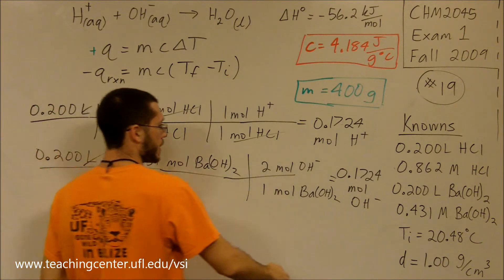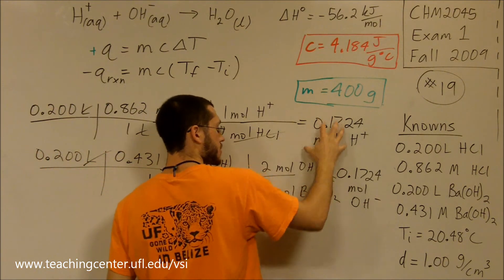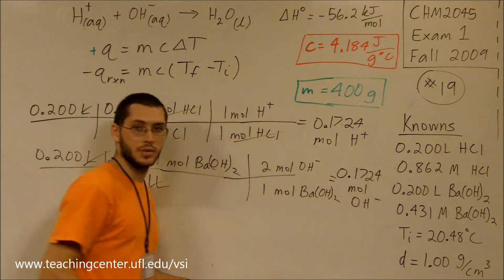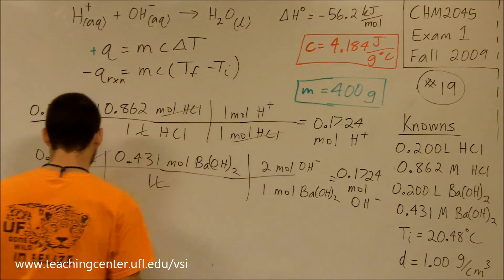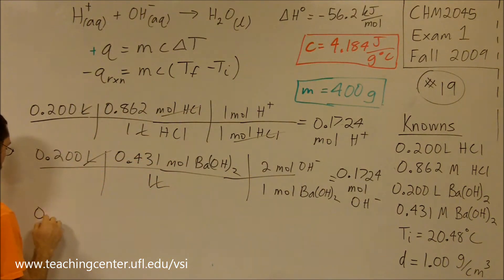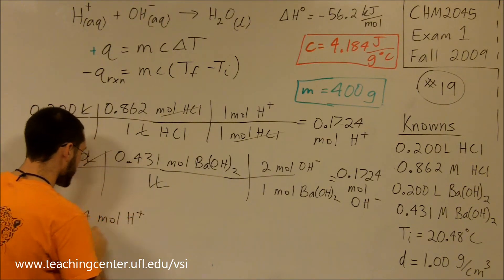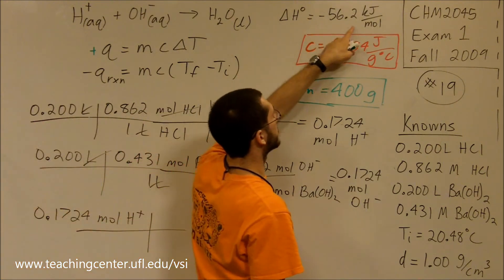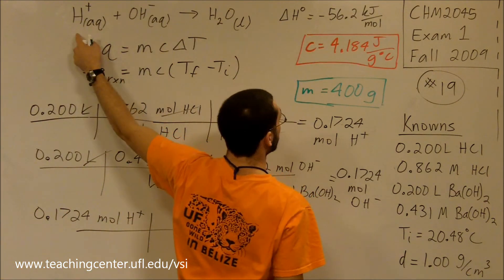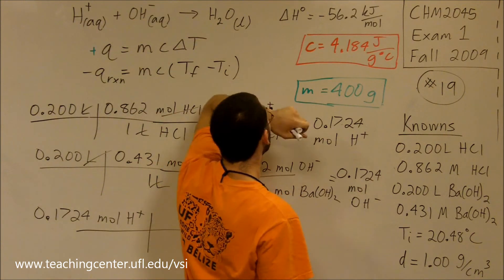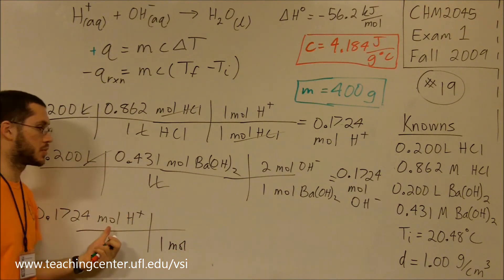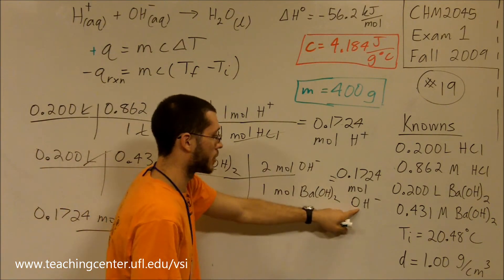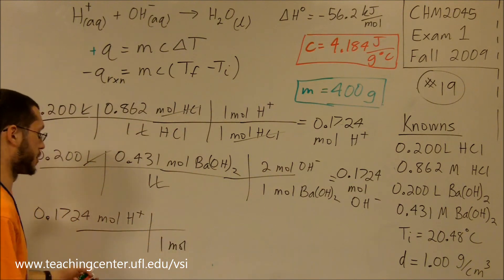That means that I can take either this amount of H⁺ or this amount of OH⁻ and convert it into heat using this ratio. Because that ratio says if I take my moles of H⁺, for every one mole of either H⁺ or OH⁻ or H₂O, it will give me that much heat. I'll arbitrarily take my moles of H⁺. I could have taken my moles of OH⁻, but I chose H⁺ instead.